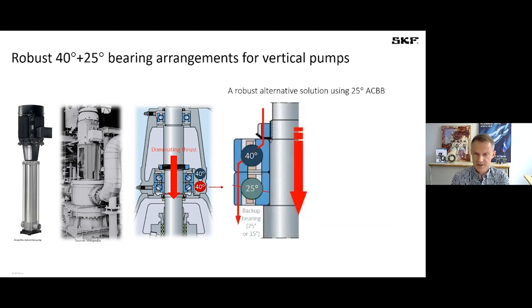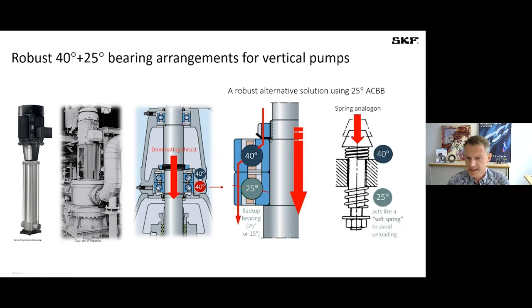And then it might be a good choice and is used in the industry to use as the backup bearing not the 40 degree but the 25 degree or also 15 degrees available. The standard is 25 but special bearings we have with 15 degree also. And what this backup bearing, this 25 bearing is kind of doing, it acts like a soft spring. So it will make sure that even if there's a lot of deformation in the system, the bearings still provide or have an internal minimum preload so that no slippage or no smearing and slipping of the balls is happening. So this is a very important point and this is a standard solution for that.